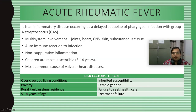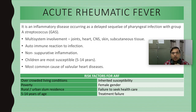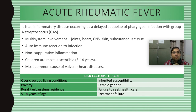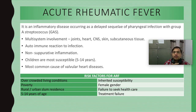Let us learn what is acute rheumatic fever. A child of age 5 to 14 years comes to the clinic with pharyngeal infection — sore throat, high-grade fever, and tonsillar exudates. This is labeled as strep throat — streptococcal infection of the pharynx. A throat swab is sent for culture and a rapid antigen detection test is done. This strep throat can lead to a rheumatic condition called acute rheumatic fever.